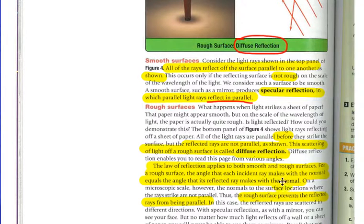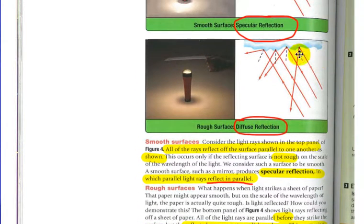The law of reflection applies both to smooth and rough surfaces. For a rough surface, the angle each incident ray makes with the normal equals the angle it's reflected. So the law of reflection holds true. But as you can see, making the perpendicular at a surface changes.